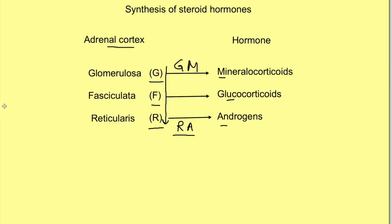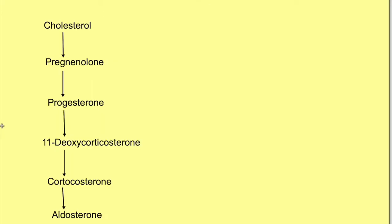What are the steps in the synthesis of adrenal steroid hormones? All steroid hormones — adrenal or otherwise, including testosterone and vitamin D — are synthesized from cholesterol, but further steps vary. The basic pathway is: cholesterol → pregnenolone → progesterone → 11-deoxycorticosterone → corticosterone → aldosterone. This can be remembered as pre-pro-DC.